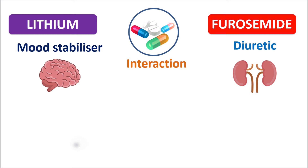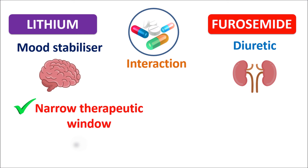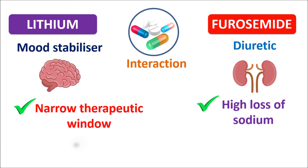Today we are going to see how lithium interacts with furosemide. Lithium is a mood stabilizer but it has one important limitation — it has a narrow therapeutic window, meaning the gap between the therapeutic level and toxic level is very narrow. On the other hand, furosemide is a diuretic which produces high loss of sodium from the body. Using these two points we can discuss the interaction.